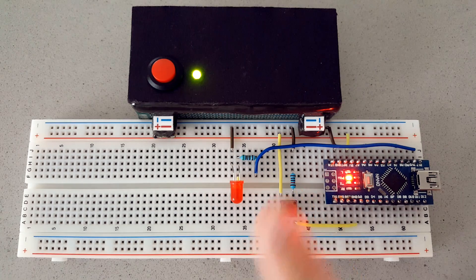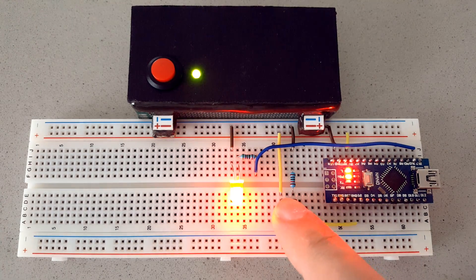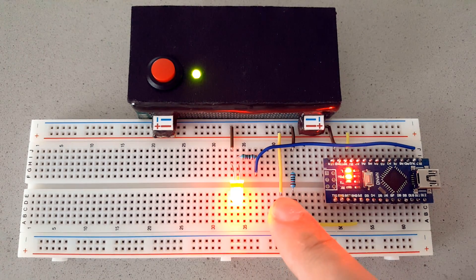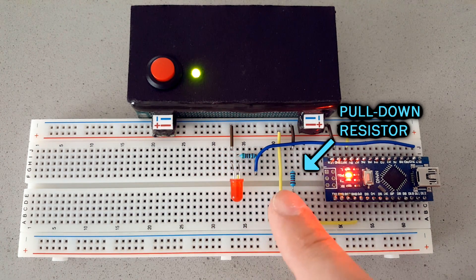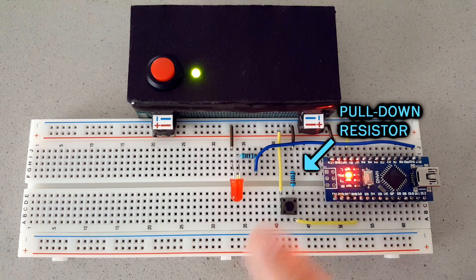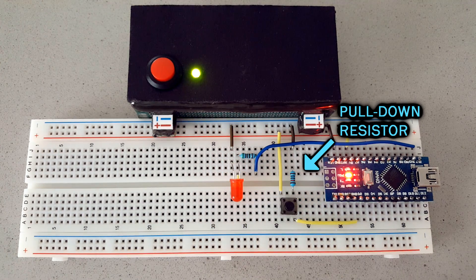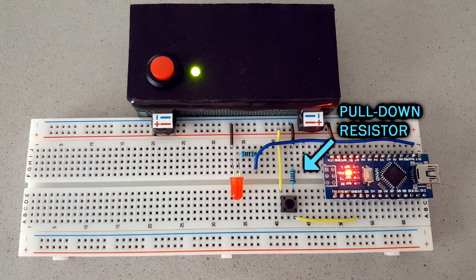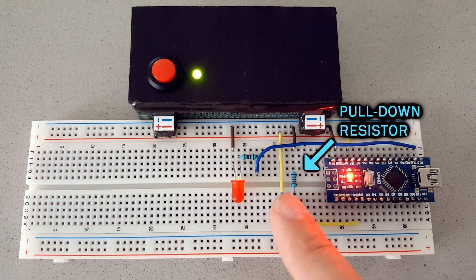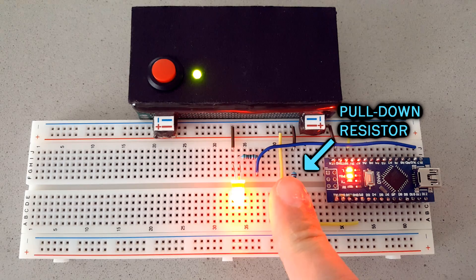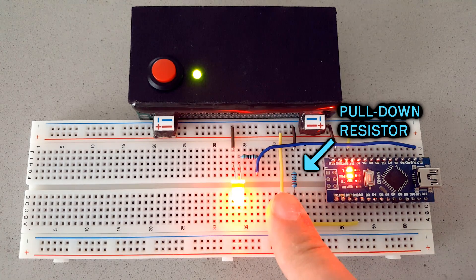That's why we use a resistor to keep the input connected to either level. If, for example, the button connects the input to 5 volts, we need a pull down resistor connected to ground, so Arduino reads the ground when the button is released. When we push the button, the direct path to 5 volts is going to overcome the ground coming from the resistor, so Arduino is going to read the 5 volts.